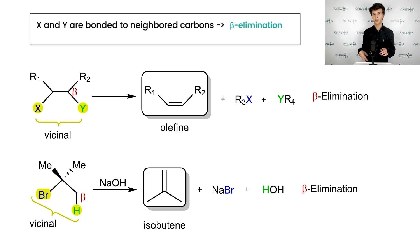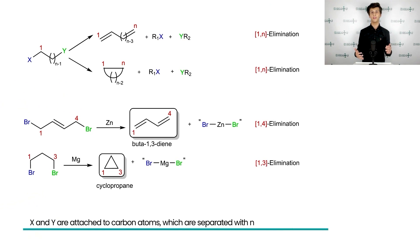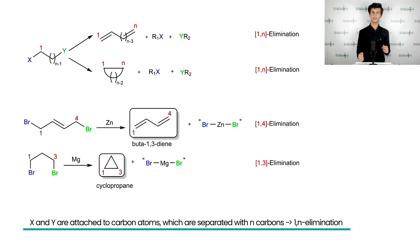The beta eliminations lead to the formation of a pi bond. In order to better understand this type of elimination, take a look at the reaction presented on the slide: the dehydrobromination of 2-bromo-2-methylbutane under basic conditions, which yields as main product isobutene. If X and Y are attached to carbon atoms which are separated with N carbons, then their removal is named 1N elimination, leading either to the formation of a pi bond or to a cyclic product. On the slide, you can see two examples of 1N eliminations.